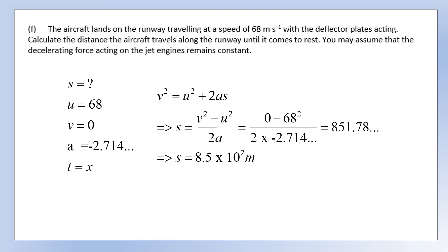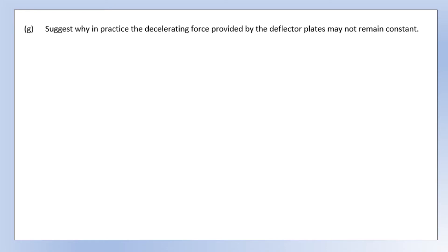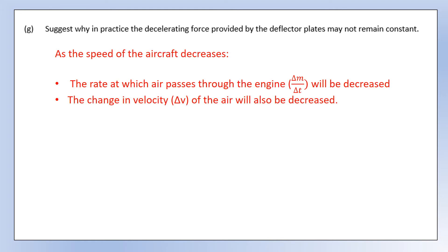Suggest why in practice the decelerating force may not remain constant. There are two parts used to calculate the force: the rate at which air passes through the engine, and the change in velocity when it hits the deflector plates. Both of these will decrease as the aircraft speed decreases, and that's what would cause the force to actually decrease.